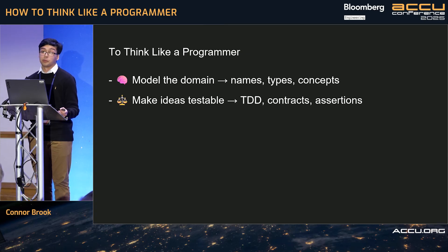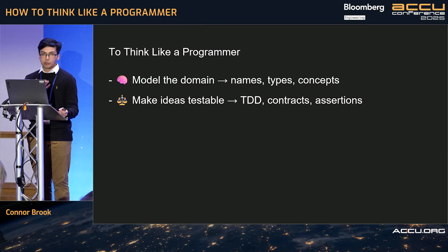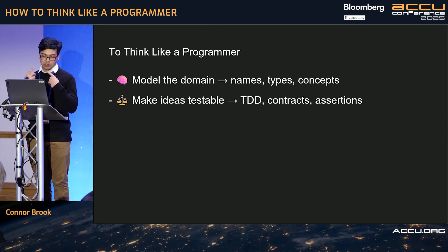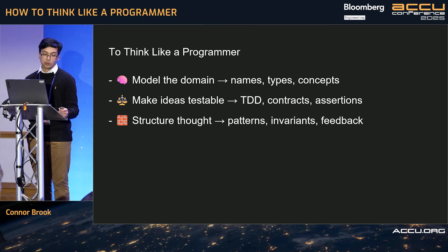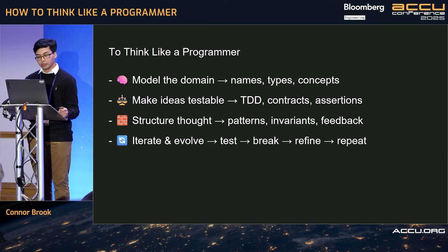To think like a programmer: model your domain — names, types, concepts. I'm probably very particular, overly particular about what I call things. To me it makes a lot of sense being very precise in what you name things. Make your ideas testable. You have this mental model of reality in your head. Unlike a bridge, which falls under gravity, you have to build those feedback loops for yourself — ways to actually check your ideas and whether they're valid. That's where test-driven design falls in: contracts, assertions, that sort of stuff. Structure your thought — patterns, invariants, and feedback. Iterate and evolve your code. It's always the same loop: test, break, refine, repeat. Clarity gives you options; options give you power.